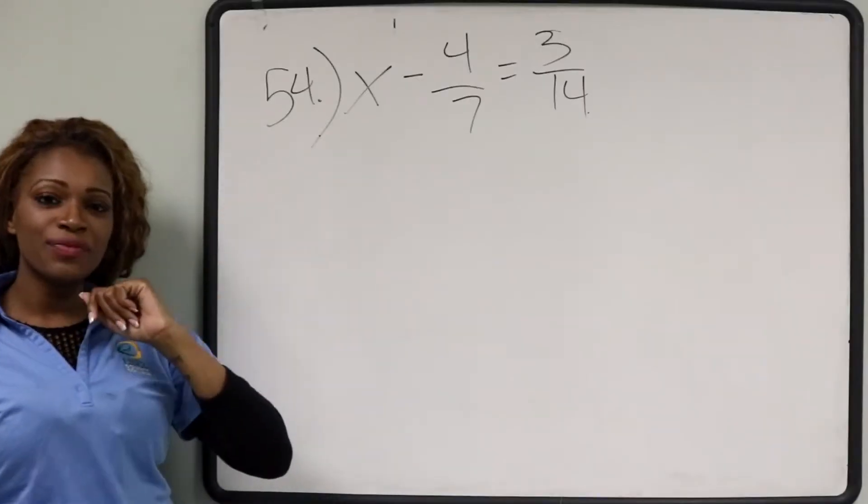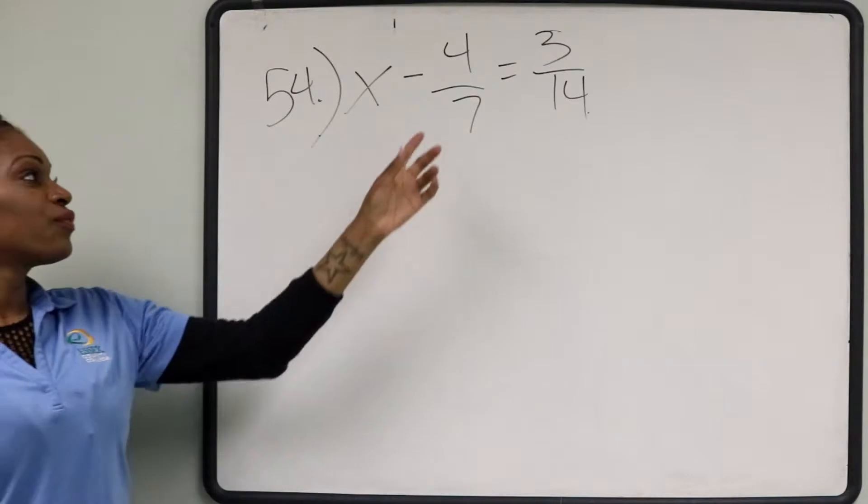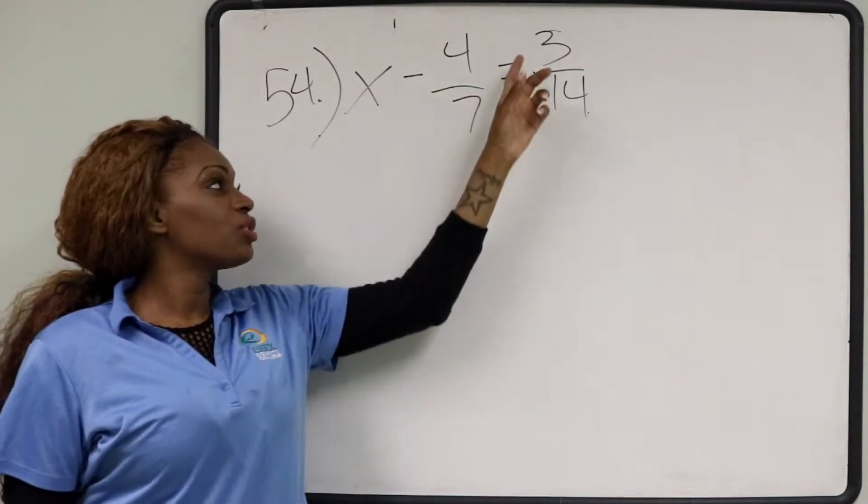Question number 54 in the Math 86 final review: x minus 4 7ths equals 3 14ths.